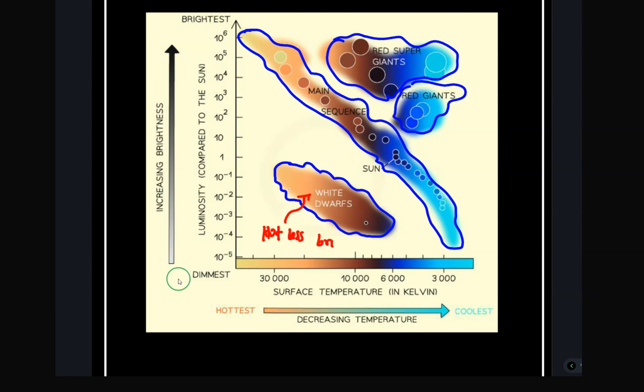White dwarfs are very hot but they are less bright because their luminosity is less. They are hot stars but less bright because they are small in size. When we move to the main sequence, these are stable stars in the sense that the inward force of gravity is equal to the outward expansive forces from within the star.